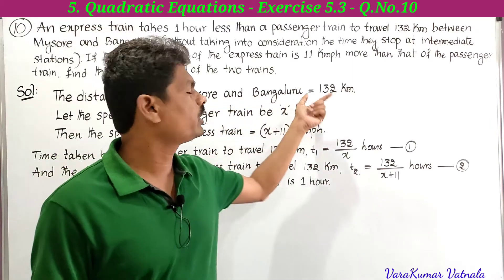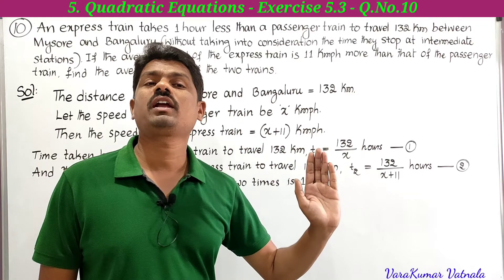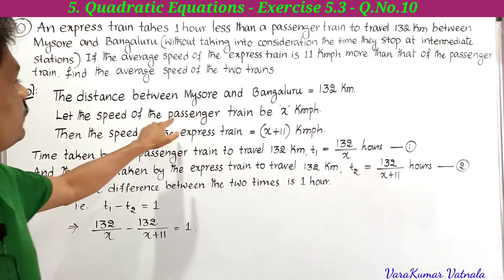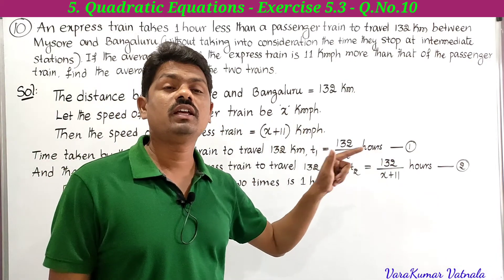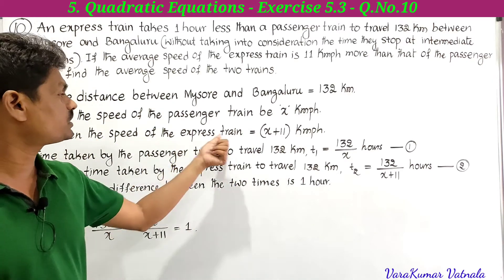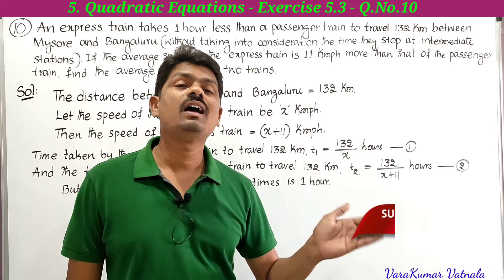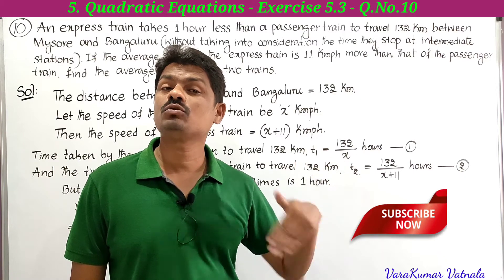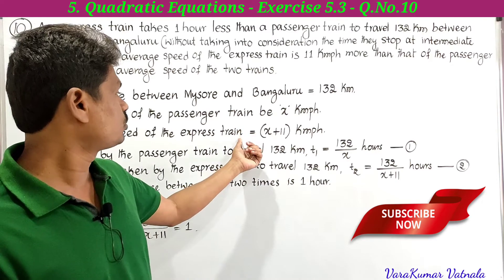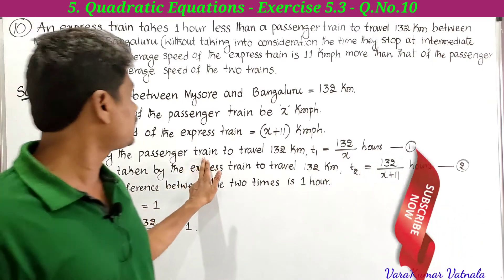The distance between Mysore and Bangalore is 132 kilometers. Let the speed of the passenger train be x kmph. Then the speed of the express train equals x plus 11 kmph, because the express train is 11 kmph more than the passenger train.